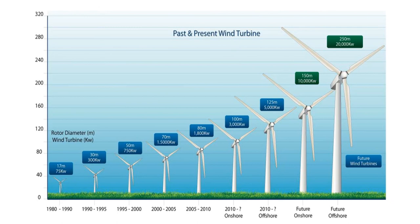Wind turbines are devices that convert the wind's kinetic energy to electrical power — the result of over a millennium of windmill development and modern engineering. Today's wind turbines are manufactured in a wide range of horizontal axis and vertical axis types. The smallest wind turbines are used for applications such as battery charging for auxiliary power. Slightly larger wind turbines can make a small contribution to domestic power supply while selling unused power back to the utility supplier via the electrical grid. Arrays of large turbines, also known as wind farms, have become an increasingly important source of renewable energy and are used in many countries as part of a strategy to reduce reliance on fossil fuels.